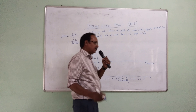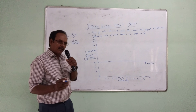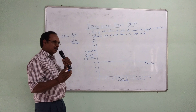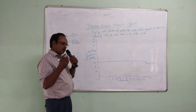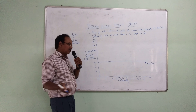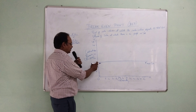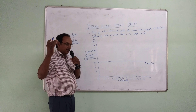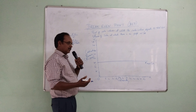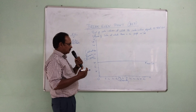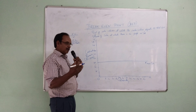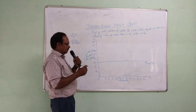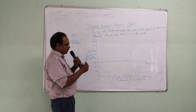Now we can consider the variable cost. There won't be any variable cost at zero production. Only when production is scaled up will the variable cost arise.